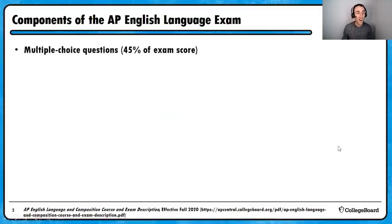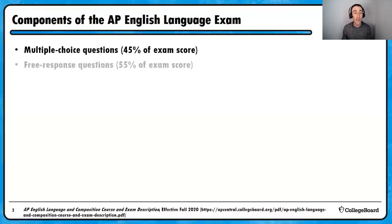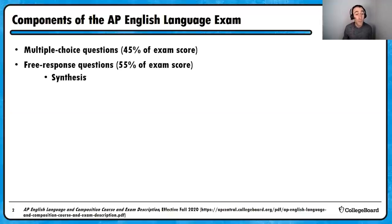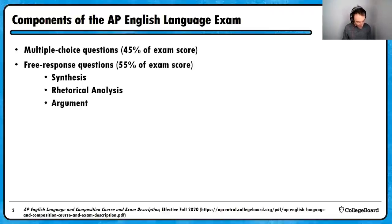As a quick reminder, those tasks are the multiple choice section, which constitutes 45% of your exam score. Those were the videos I worked with you on in previous sessions. We're also reviewing each of the three writing tasks or free response questions, which count for 55% of your overall exam score. My friend Alfonso recently worked with you on question number one, the synthesis essay. Today we'll be turning to question two, the rhetorical analysis essay. And later, Alfonso will be back to talk about the argumentative essay.